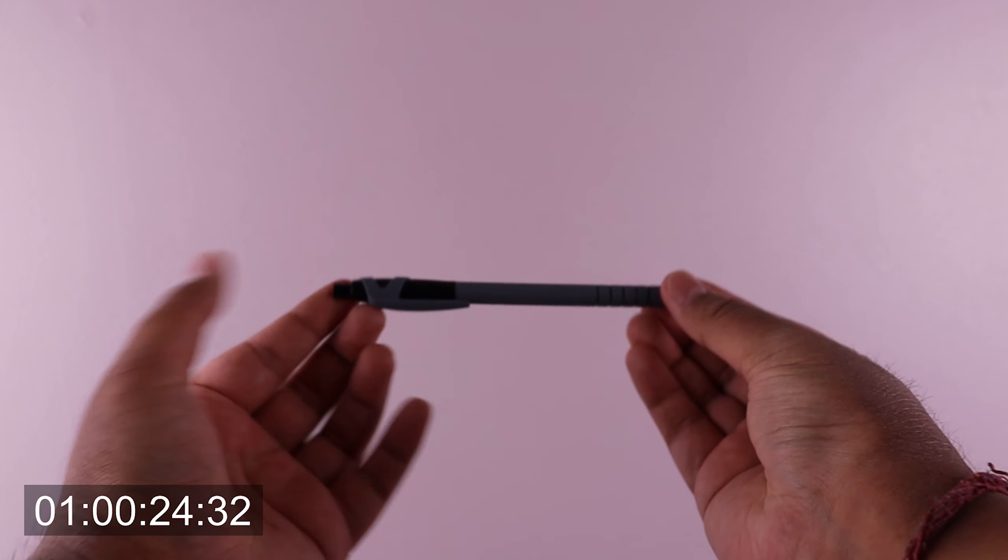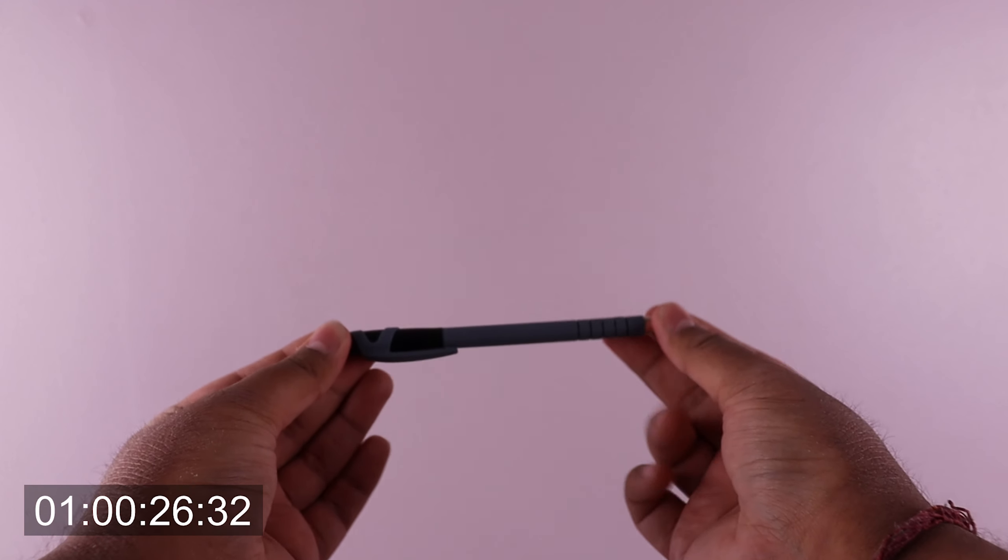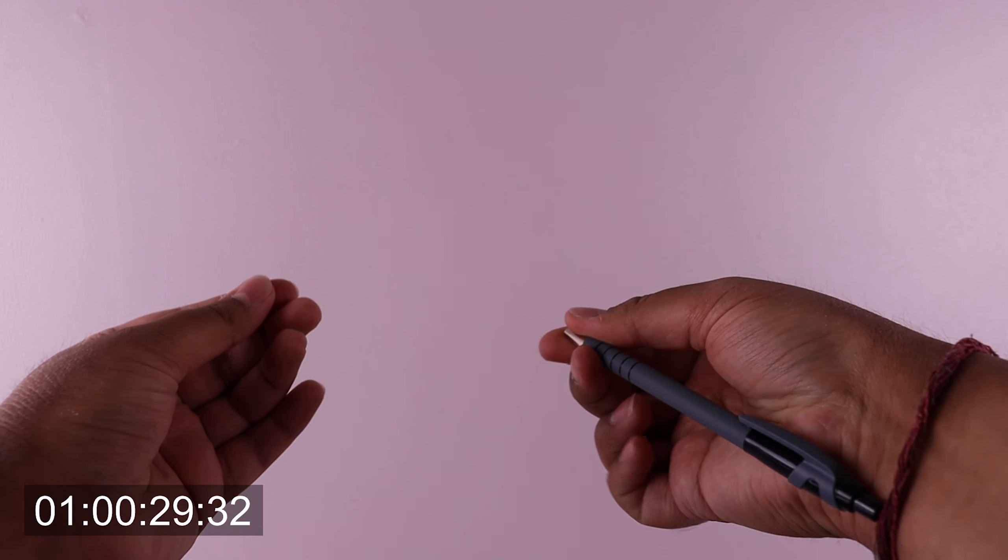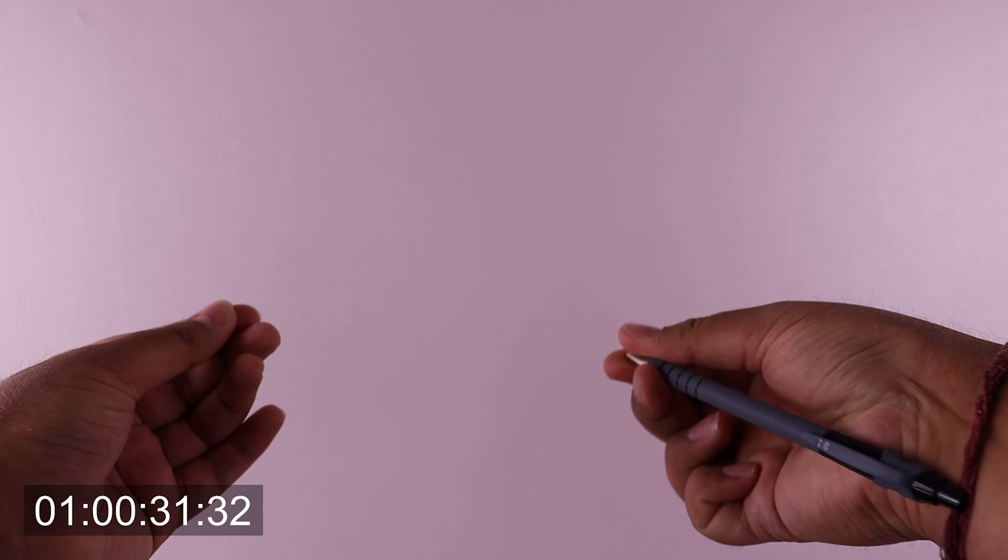All you need to do to make the pen disappear is grab it in your hand like this and flick it back with the middle finger with a jolt at the same time to hide the action, and to make it reappear just flick it back again.